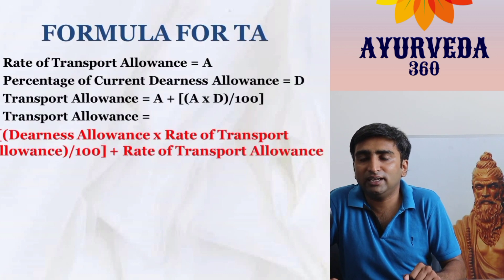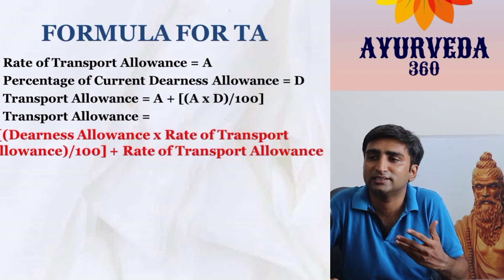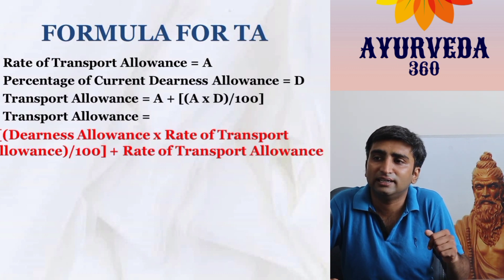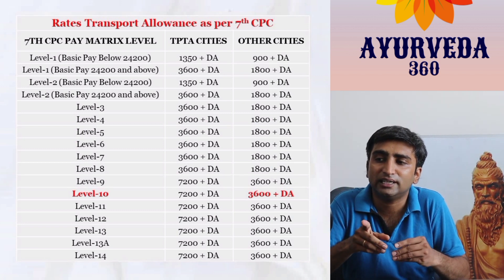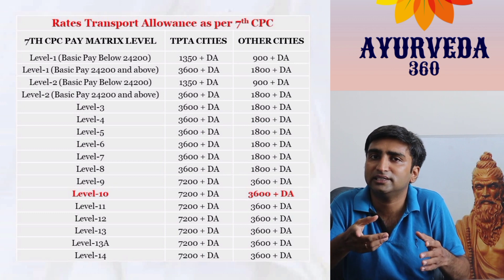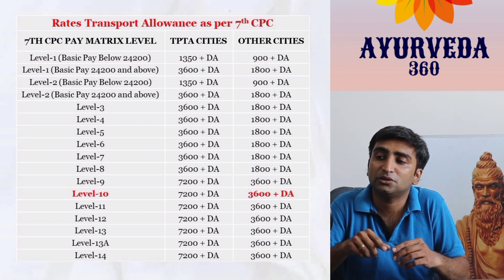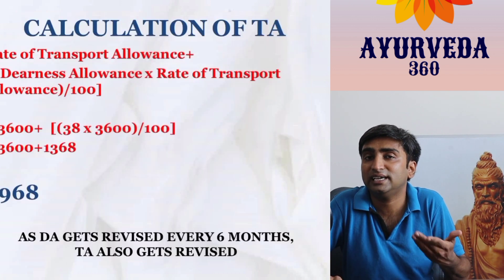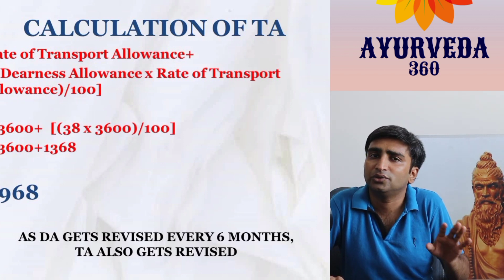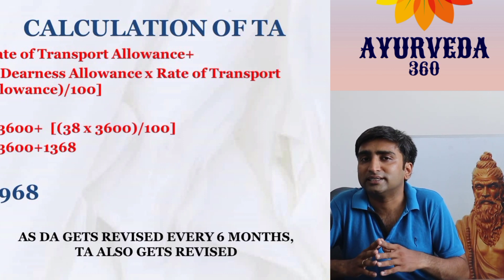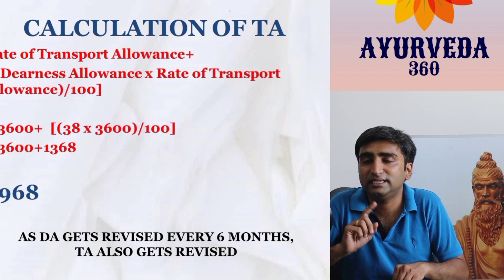Travelling Allowance (TA) for a Level 10 employee in a TPTA city is ₹7,200 plus DA. Jaipur and Varanasi are not TPTA cities, so TA is ₹3,600 plus DA. With DA at 38% of ₹3,600, the total TA comes to approximately ₹4,968 at present. Since DA is part of the formula, TA also gets revised every six months.